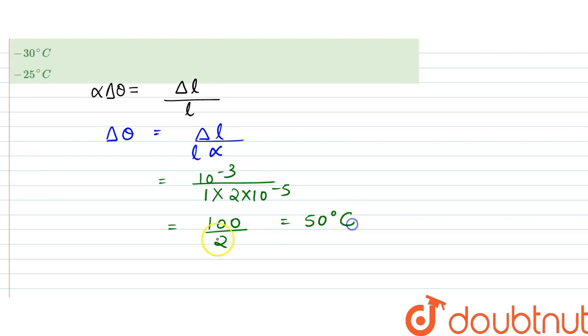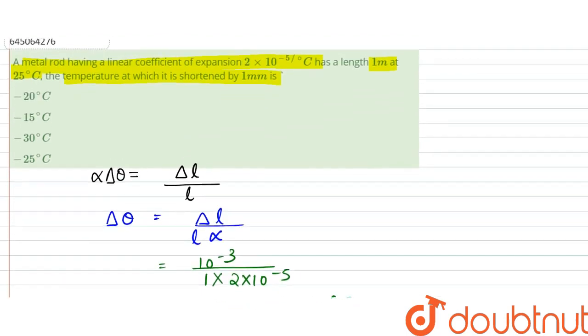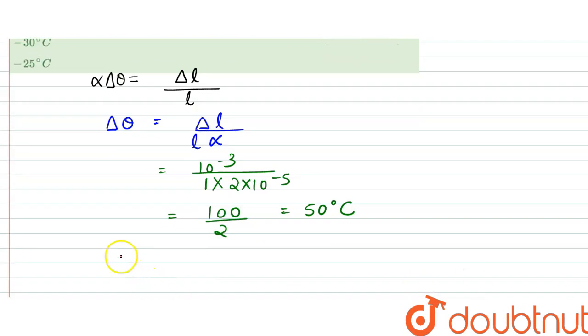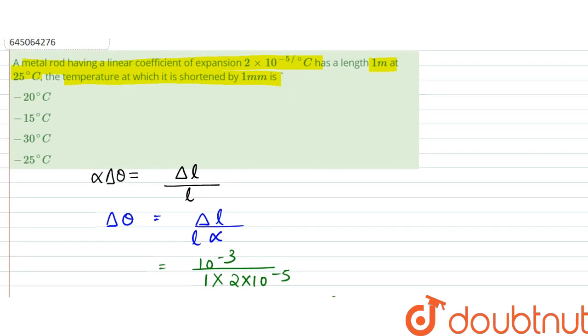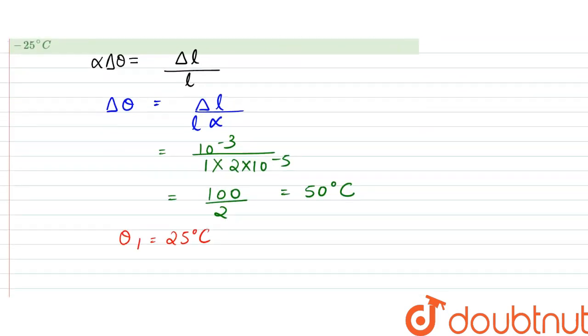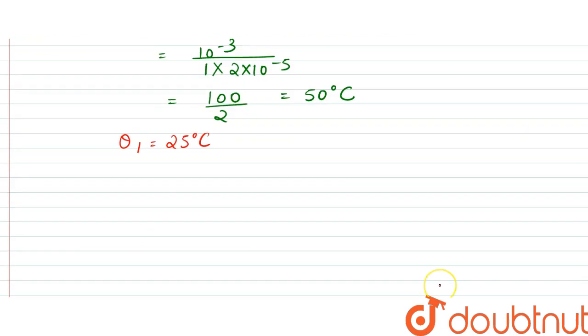Since θ₁ is given as 25 degrees Celsius and the length has been shortened, that means we have decreased the temperature. That is why the contraction has been occurring. So θ₁ - θ₂ is equal to 50 degrees Celsius.